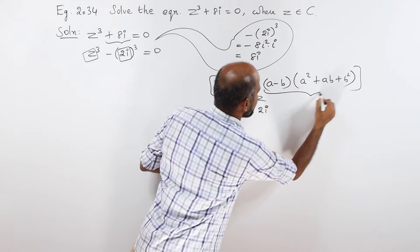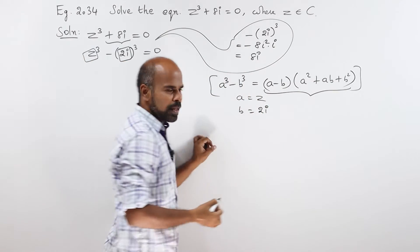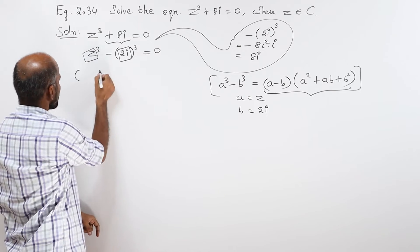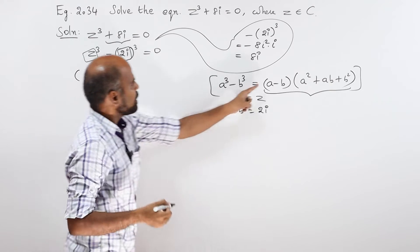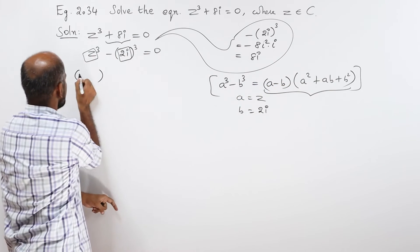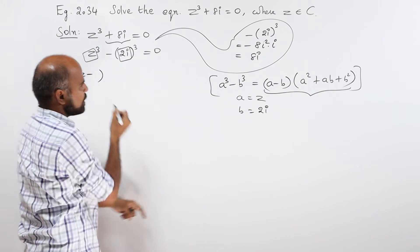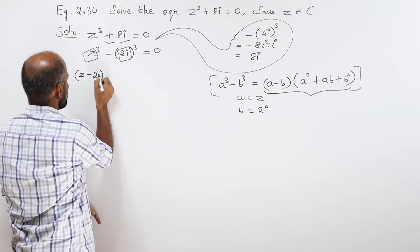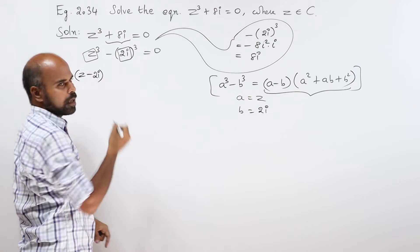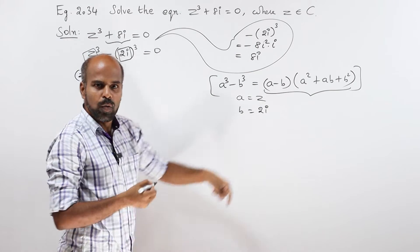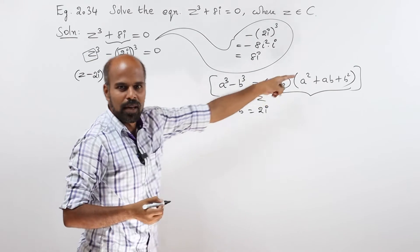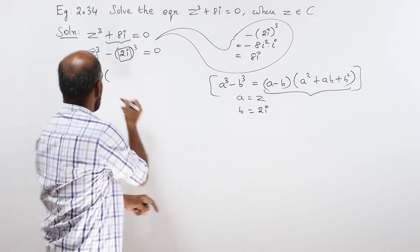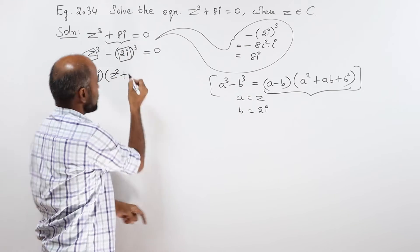Now apply the formula: round bracket a minus b, that is z minus 2i, close bracket, into round bracket a square, that is z square.